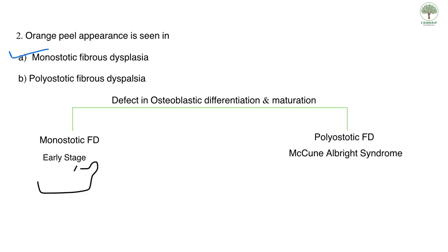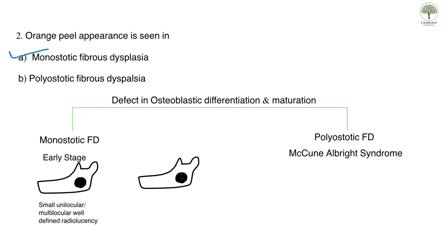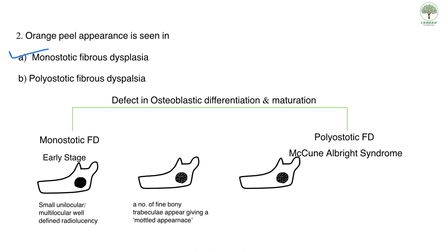Three types of radiographic appearances are seen in fibrous dysplasia. First, a small unilocular radiolucency or multilocular radiolucency with a well-defined border containing a network of fine bony trabeculae. Second, increased trabeculation renders the lesion more radio-opaque giving a mottled appearance. Finally the lesion becomes quite radio-opaque with many delicate trabeculae giving a ground glass or orange peel appearance.